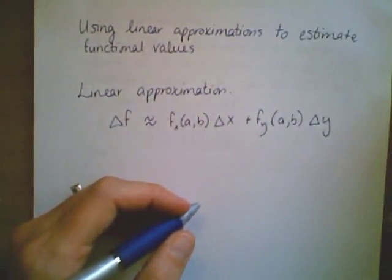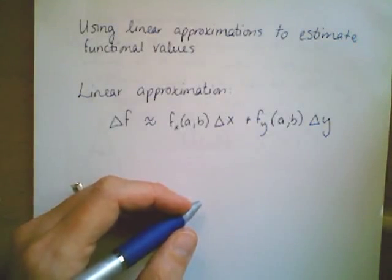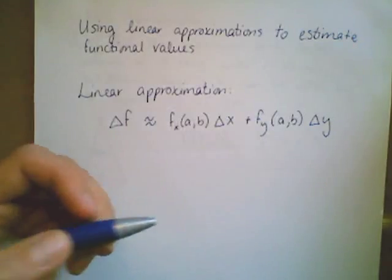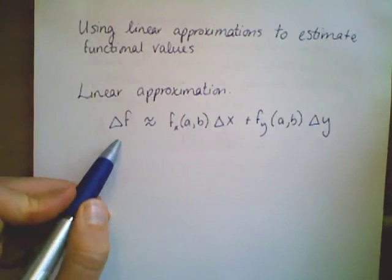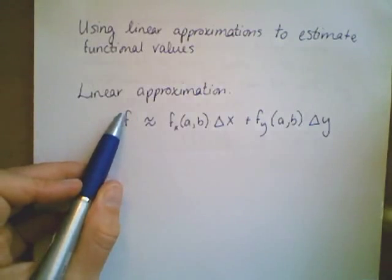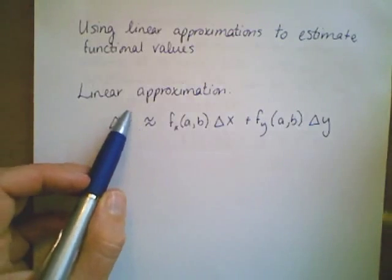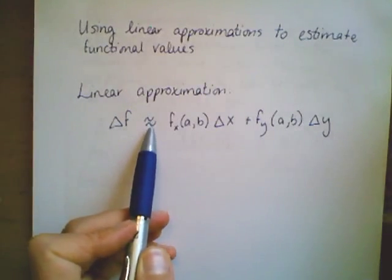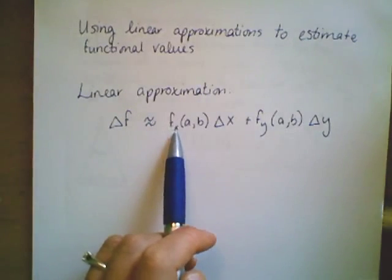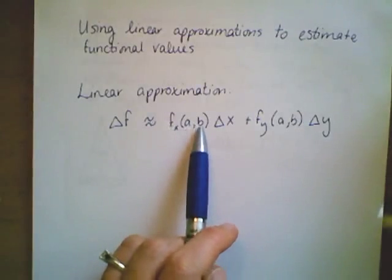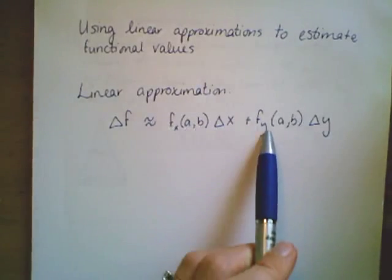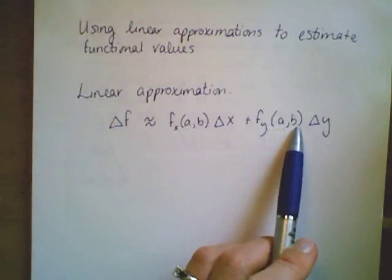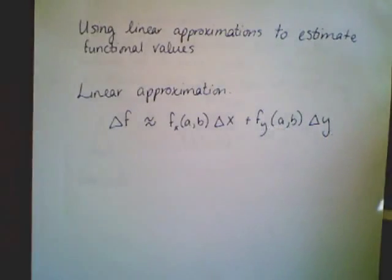The final topic from chapter 14.4 is using linear approximations to estimate functional values. What is a linear approximation? The change in f, or the change in z value, is approximated by the partial derivative at point (a,b) times the change in x, plus the partial derivative with respect to y at point (a,b) times change in y.